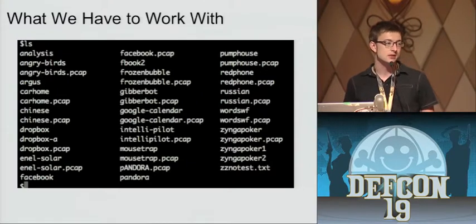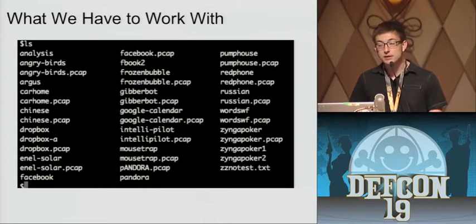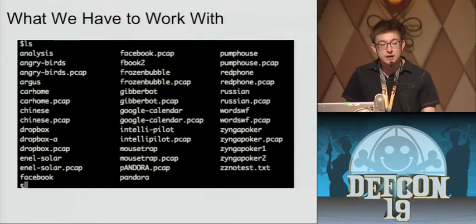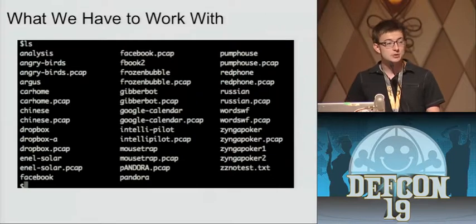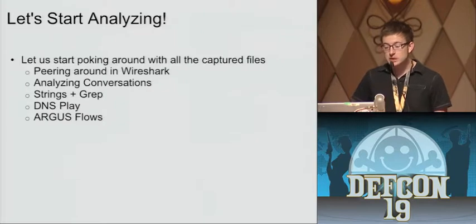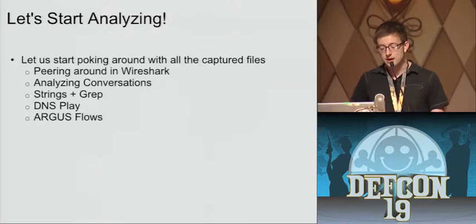I decided to take all the information that an attacker or man-in-the-middle — or a corporation — would have. Later I want to add a root certificate to the phone and collect everything, but for now I've got packet captures and SSL strip outputs, and that alone has proved very interesting. With each packet capture, I first looked around in Wireshark, analyzed conversations and IPs. Then I ran strings, grep, basic Linux stuff, DNS play, and Argus flows.